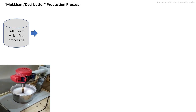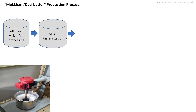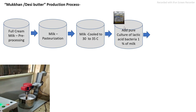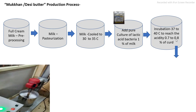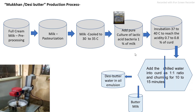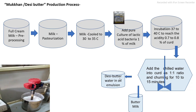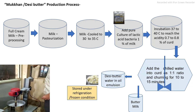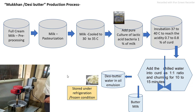In small scale industry level, the desi butter production process steps are the same as home scale. Receive full cream milk, pre-process, and pasteurize properly. Cool to inoculation temperature, then add lactic acid bacteria starter culture. Incubate until acidity reaches 0.7 to 0.8%, converting milk to curd. Add chilled water, carry out churning, break the emulsion, and separate the desi butter from buttermilk. Press out the remaining buttermilk, then pack and store under refrigeration or frozen conditions.